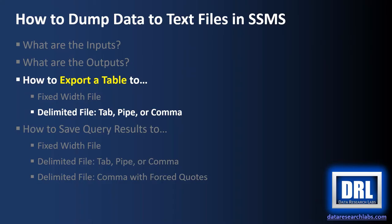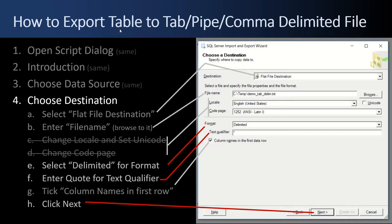Next up, how to export a table to a delimited file — tab delimited, pipe delimited, or comma delimited. To export a table to a tab, pipe, or comma delimited file, it's similar to the flat file steps we just did. First open the script dialog, then look at the introduction step, then choose a data source — SQL Server. All those steps are the same. But on the fourth step, choosing a destination, we still select Flat File Destination and enter a file name. Leave the locale and code pages.